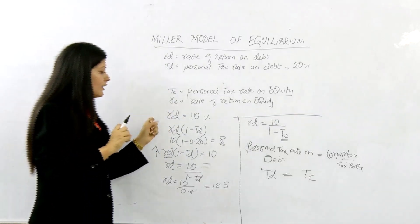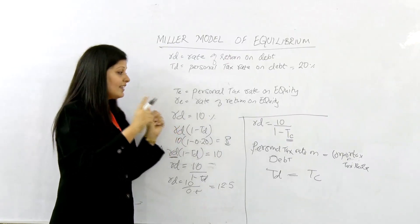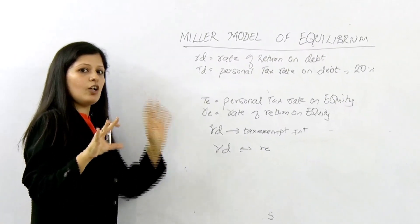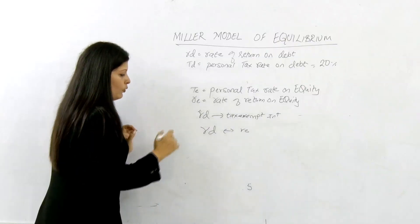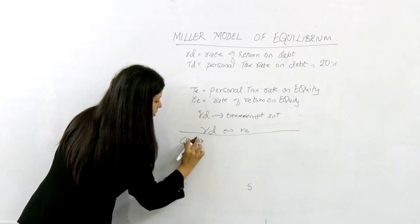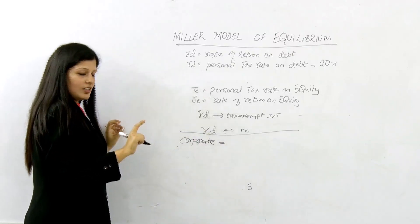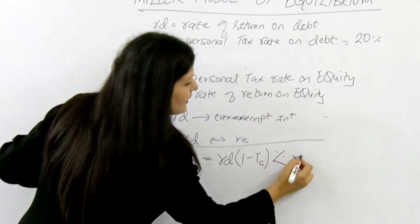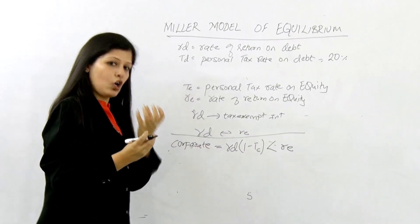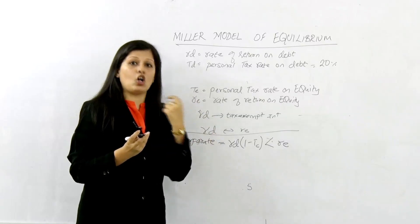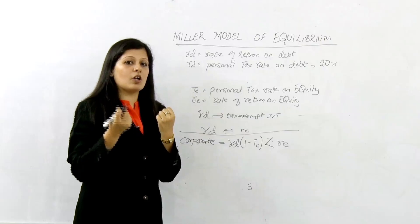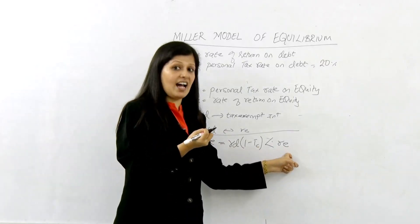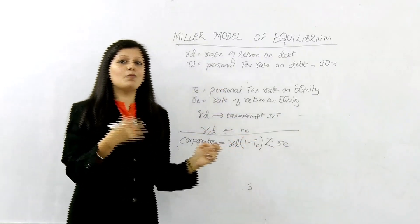Now let us compare RD with equity holders from the company's point of view, again in the setting of corporate and personal taxes. Companies find it advantageous to issue debt to the extent that RD × (1 - TC) is less than RE. RD × (1 - TC) is the effective cost of debt, since the company saves on this cost due to the taxation effect. As long as this effective cost is less than RE — the return required by equity shareholders — the company is motivated to issue debt.